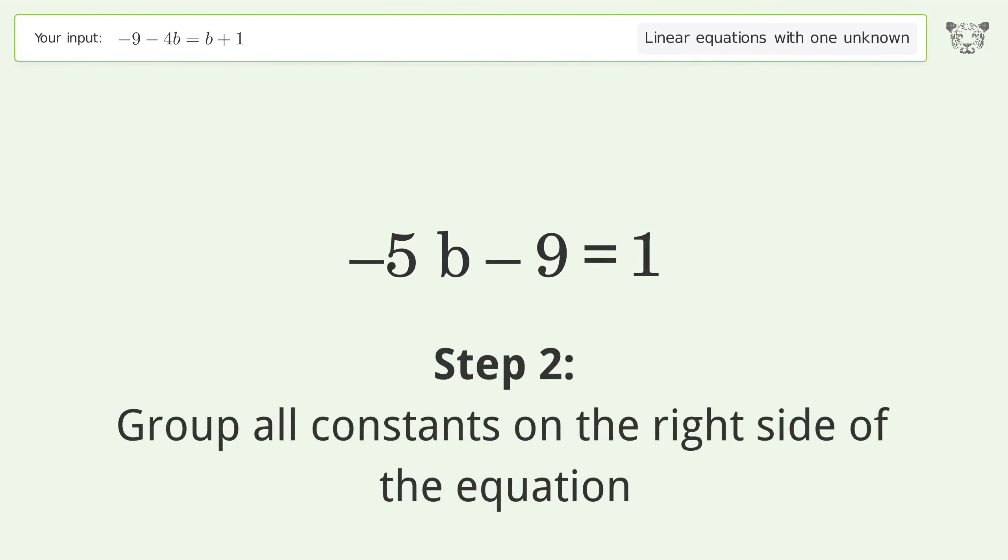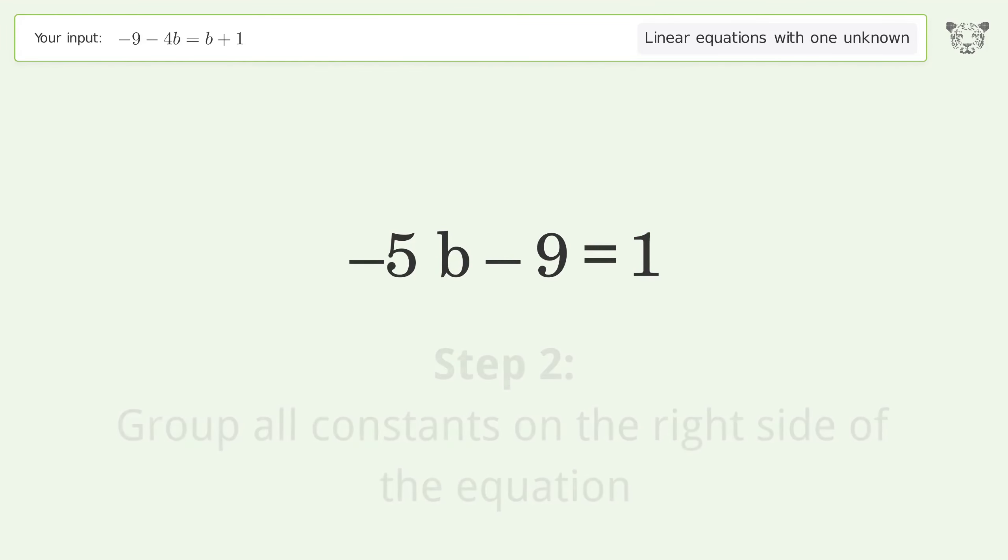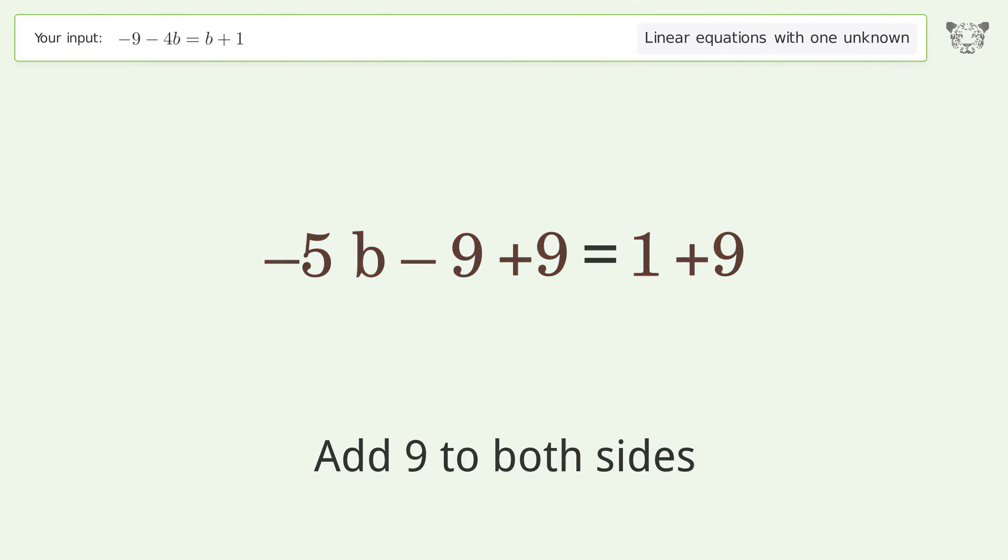Group all constants on the right side of the equation. Add 9 to both sides. Simplify the arithmetic.